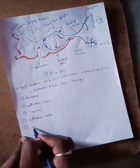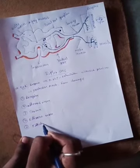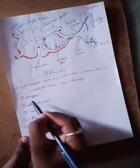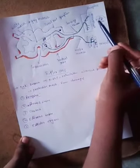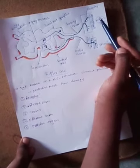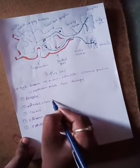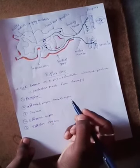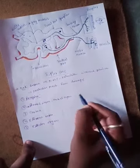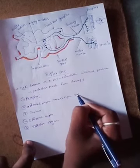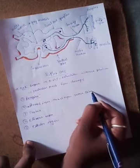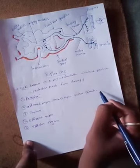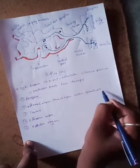Number four is the efferent nerve, and number five is the effector organ. The receptor is the end organ which receives the stimulus. With the stimulus, the receptor is stimulated.